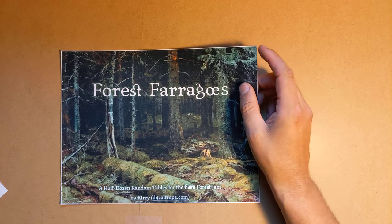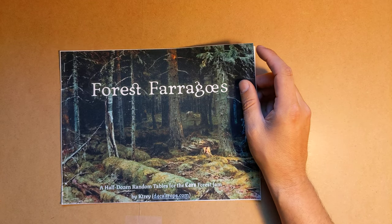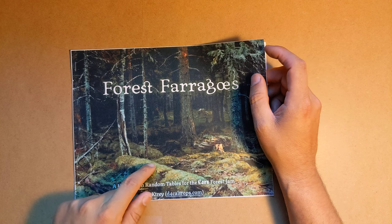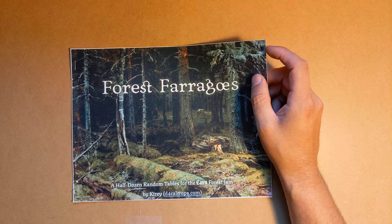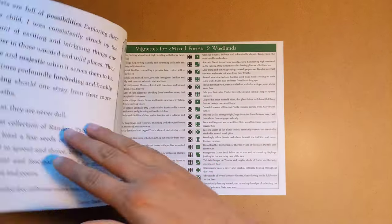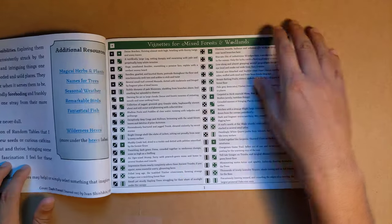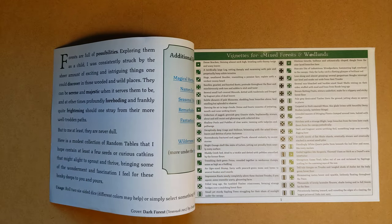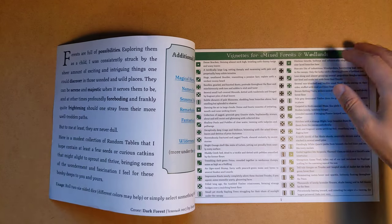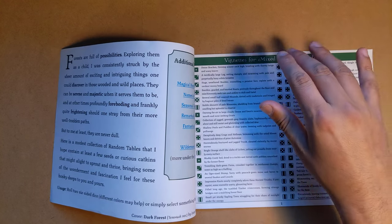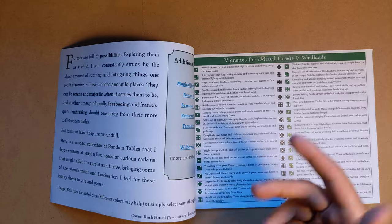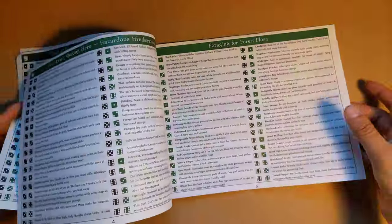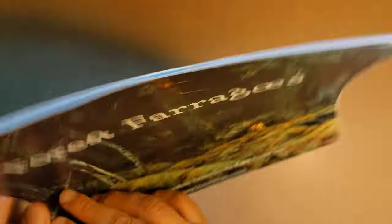Next is Forest Faragos. I don't know how to pronounce that word. So this is, I was really excited about, because K-Tray, also blogging at D4 Caltrops, does incredible tables. I mean, just amazing work. I gotta focus this, since it's one of the bigger ones. It is a half dozen random tables that pertain to forests. Vignettes, happenstances, hindrances, and results for hunting and foraging in the forest. Quite beautiful. Large.